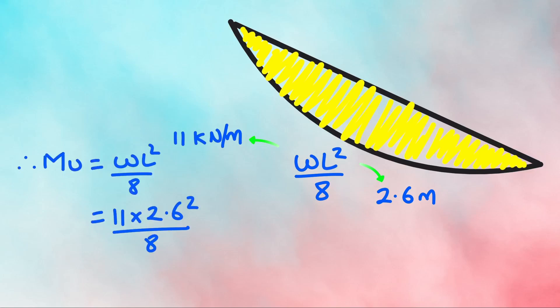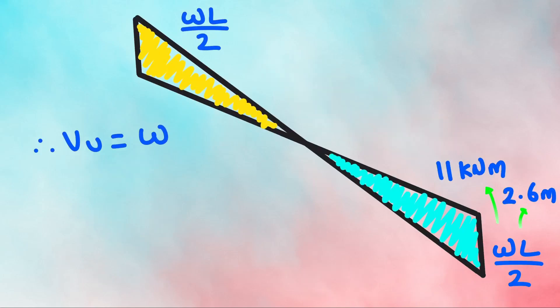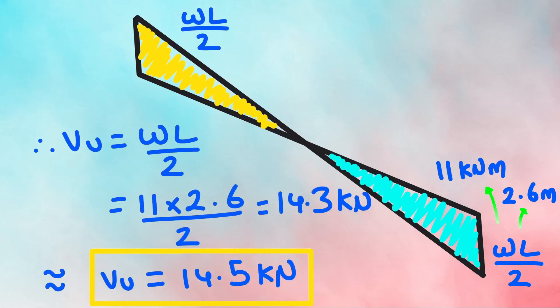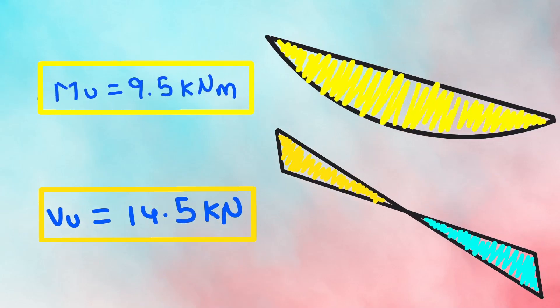To calculate factored moment MU, we will use the formula WL square by 8 since we assumed the slab to be simply supported. Substituting the value of W and L effective gives factored moment of 9.5 kN meter. Next, the factored shear force VU is WL by 2. Substituting the values gives factored shear force as 14.5 kN. So our factored moment is 9.5 kN meter and factored shear force is 14.5 kN.